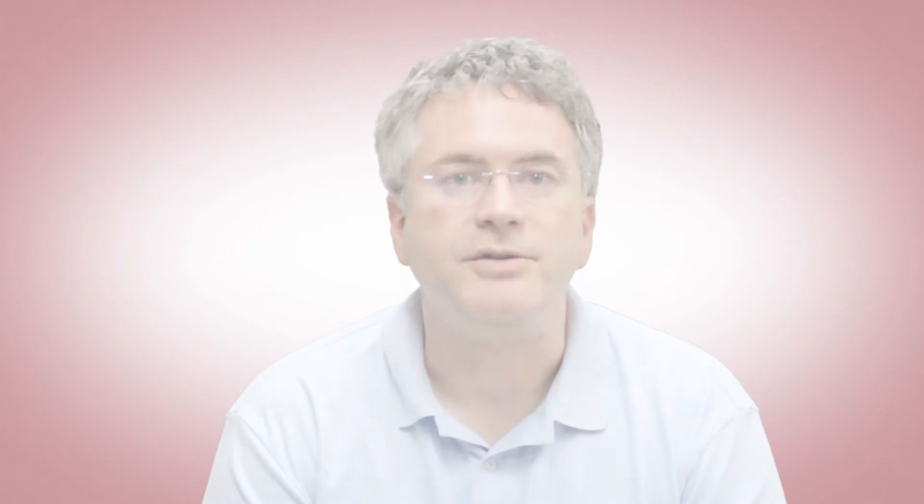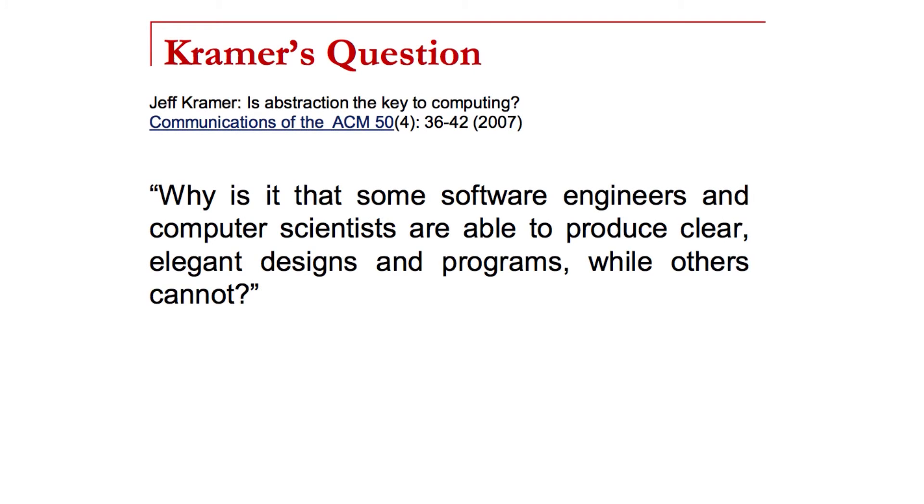In that paper, Kramer asks why it is that some software engineers and computer scientists are able to produce clear, elegant designs and programs while others cannot. We also see this with students — why are some students able to excel in computer science and some not? The questions in this paper are about what property helps determine that, whether it is teachable, and how we can notice how students might be able to excel in computing.